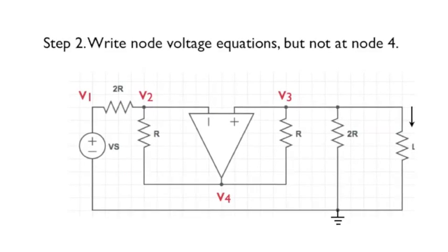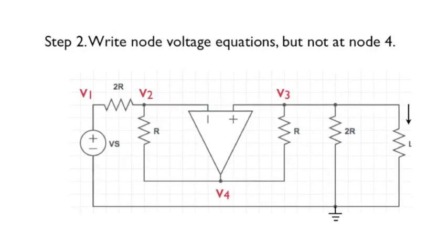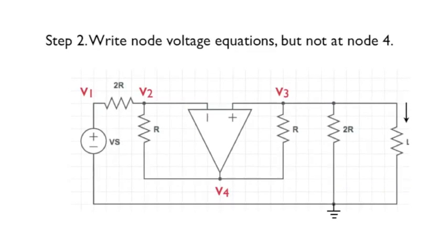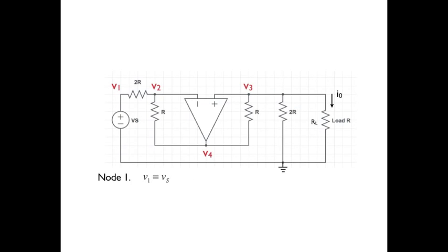And the second step is to write node voltage equations, but not at node number 4. That's where the op-amp output is. Looking at node 1, the voltage must be equal to V sub S. There's a voltage source between node 1 and ground, so we can say that V1 is equal to VS.